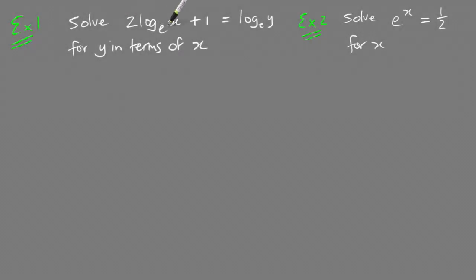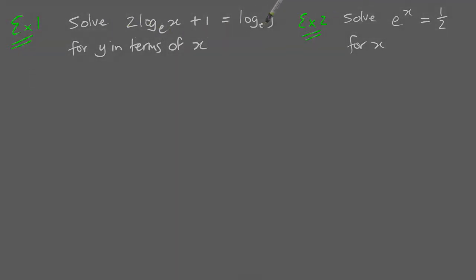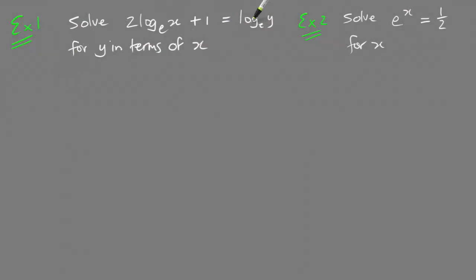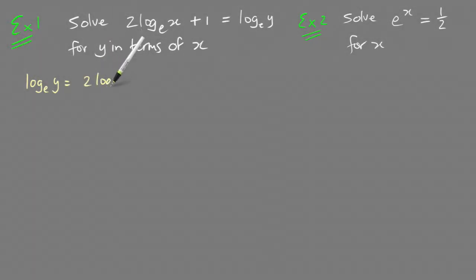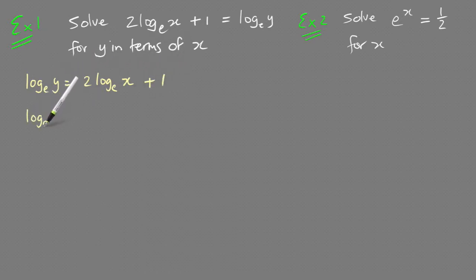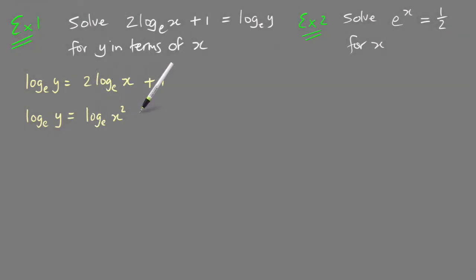Example 1: solve 2·log_e(x+1) = log_e(y) for y in terms of x. So you've got to make y the subject here. I'm going to turn the equation around and have log_e(y) = log_e(x+1), and then I'm going to put that 2 in, so it becomes log_e(x²) + 1.